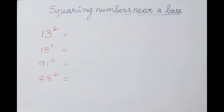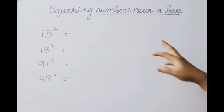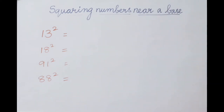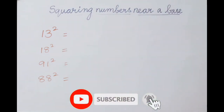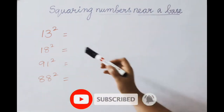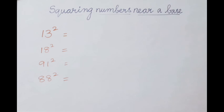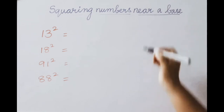Hello everyone, today we are going to learn how to square numbers. The first method is how to square numbers that are nearer to a base. Our first example is 13 squared. Here 13 is nearer to which base? That is 10. So for 10, how much extra are we having? That is 3.